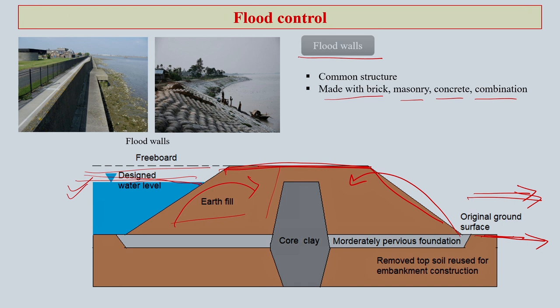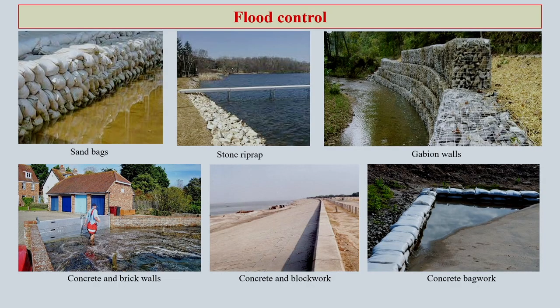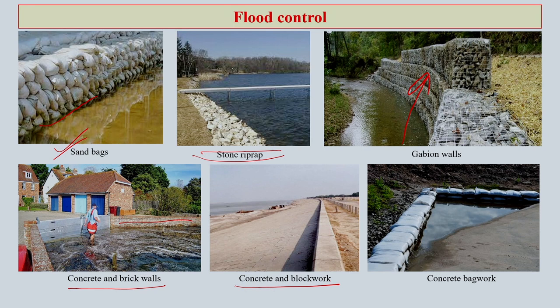Beyond a certain point, this kind of structure may not work. Sandbags, as you have seen in many places, and stones or riprap are also used along the side of the river. Gabion walls are also used if you anticipate that water levels could rise with the rainy season. Concrete and brick walls are often used and are seen largely in developed countries, and can also be seen in some coastal regions of India in a different format.